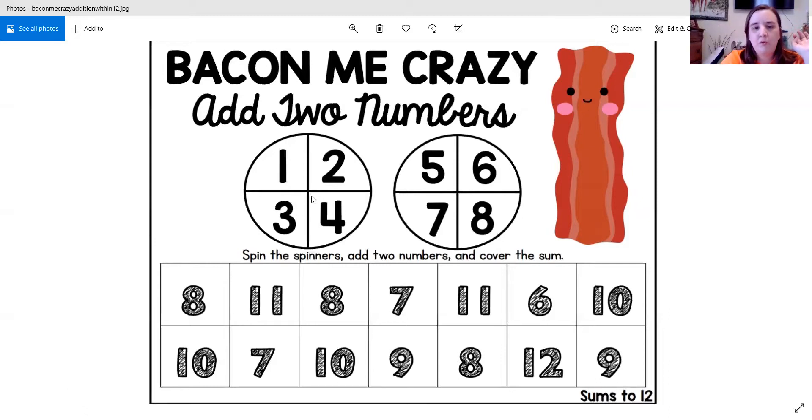The left spinner is the one you spin first. It has numbers 1, 2, 3, and 4. That's your first spin. So let's say I spun a 2, that would be one of my addends. Remember, an addend is the number that you add together in an addition equation. So that will be my first addend.